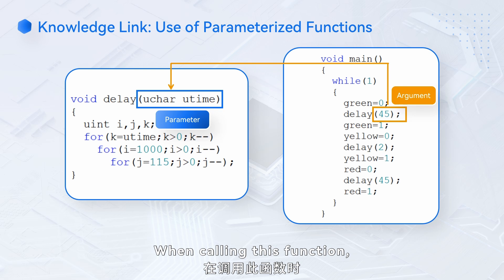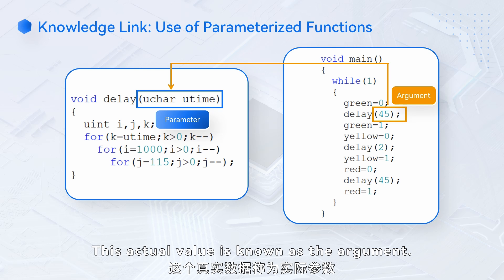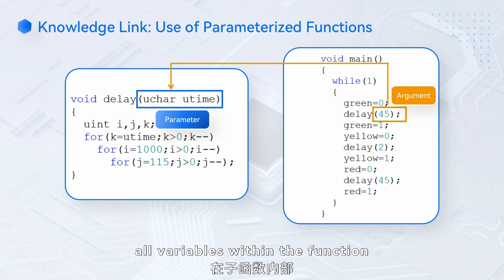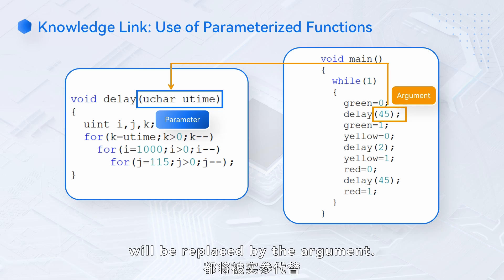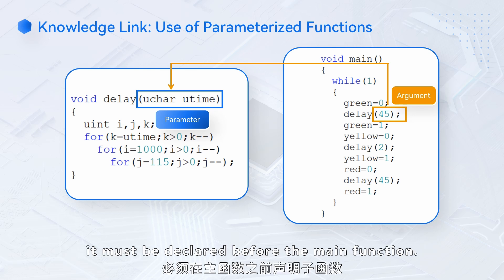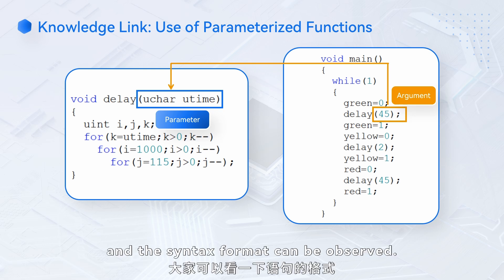When calling this function, a specific actual value replaces this parameter — this actual value is known as the argument. Once the parameter is replaced by the argument, all variables within the function that have the same name as the parameter will be replaced by the argument. If the subroutine is defined after the main function, it must be declared before the main function. The declaration of the subroutine is shown on line 4 of the program, and the syntax format can be observed.